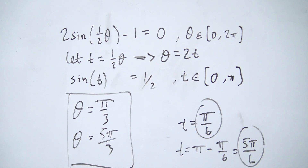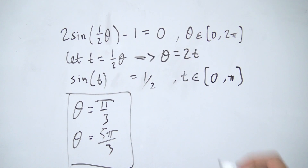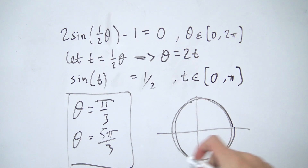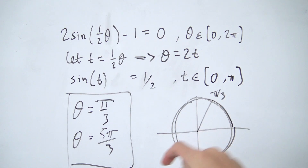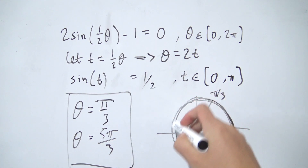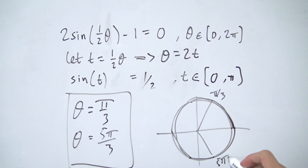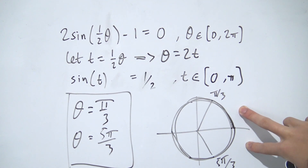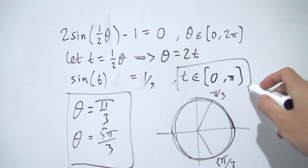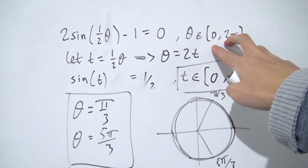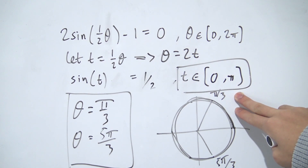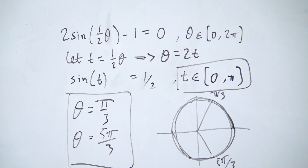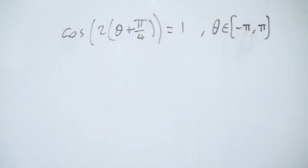Both of our solutions — π/3 and 5π/3 — lie within the original domain of zero to two pi. This confirms we got the right answers. It's very important to change your domain when you do the substitution, because if you don't, you'll either miss solutions or pick up extra ones. Always change your domain to ensure you get the right number of solutions.